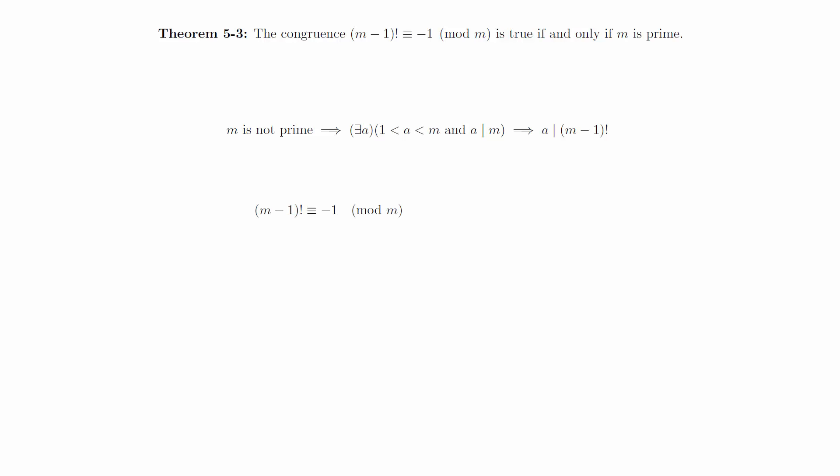Notice that a divides m minus 1 factorial because it is an element in the factorial product. Suppose for a contradiction that m minus 1 factorial is congruent to negative 1 mod m. Then there exists an integer k such that m minus 1 factorial plus 1 is equal to k times m. Since a divides m, and a divides m minus 1 factorial, we must have that a divides 1, but this is impossible since a is greater than 1.